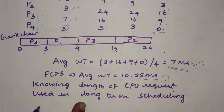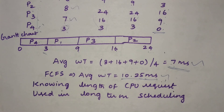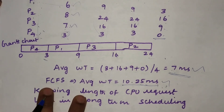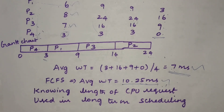SJF may be used in long-term scheduling — that is, scheduling processes from secondary memory to main memory — but it is not very efficient for short-term scheduling, which is CPU scheduling.